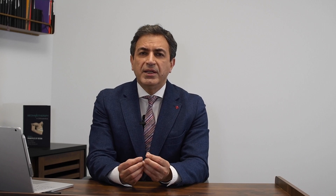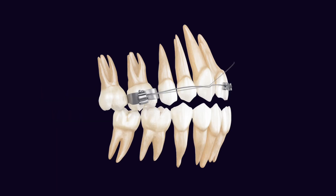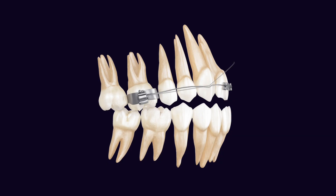Now let's look at synergistic mechanics. Assume I have a case where the anterior teeth require proclination and also require extrusion. What happens if I put the anterior v-band? My mechanics are aimed to move the anterior segment as one target, and it has two beneficial effects: proclination of the anterior teeth, which I want, and extrusion of the anterior teeth, which I also want. With one design we achieve two goals — this is synergistic mechanics, with no conflicting component.